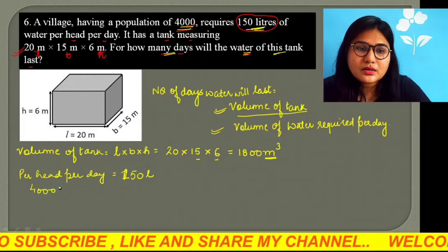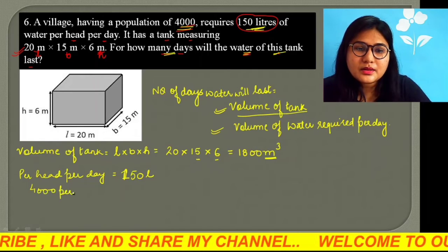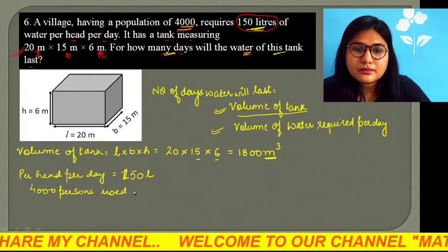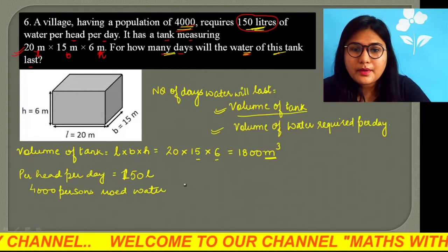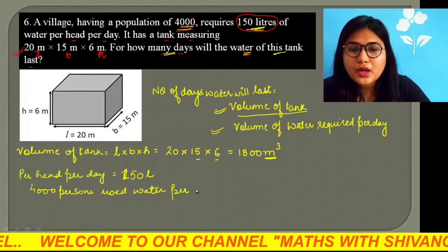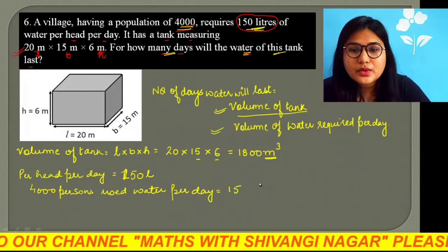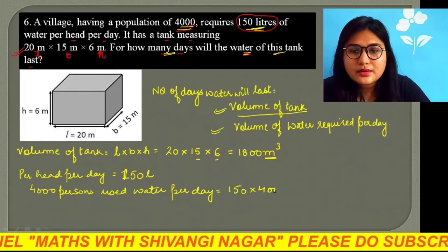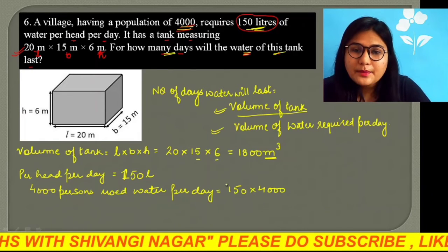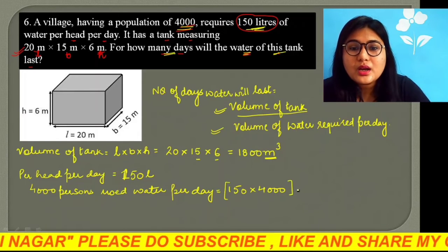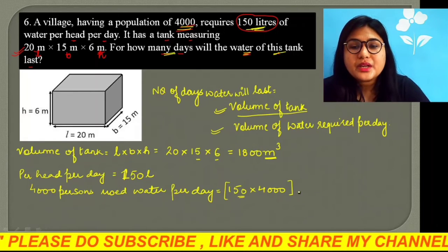So, it is 150 into 4000. So, this will come. Now, this is what we have data. This is what we have total. How much per day is used in liters.